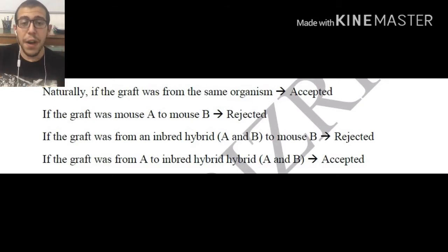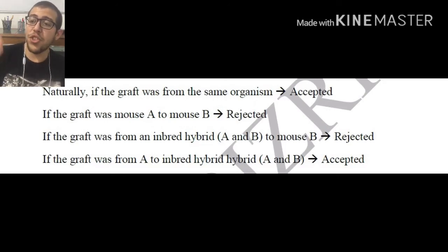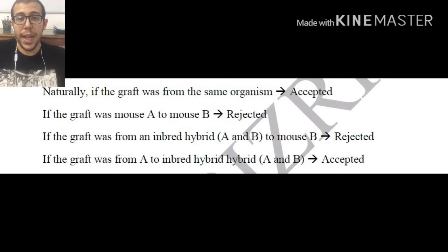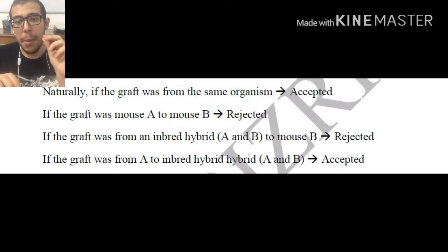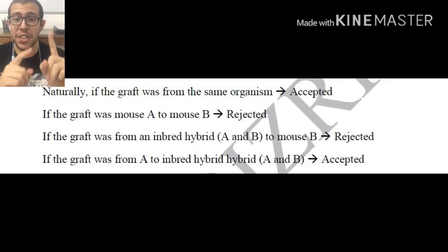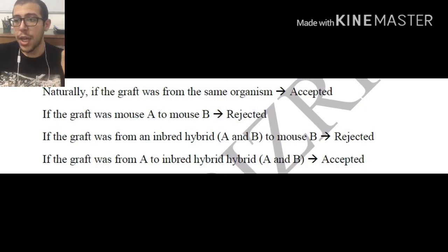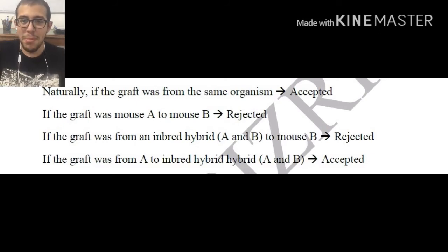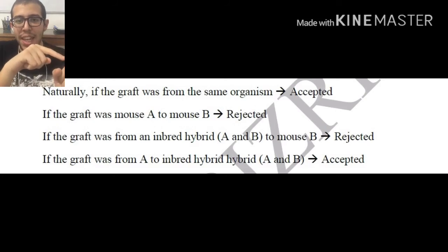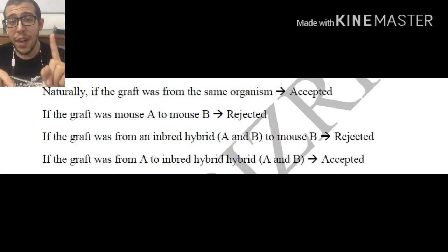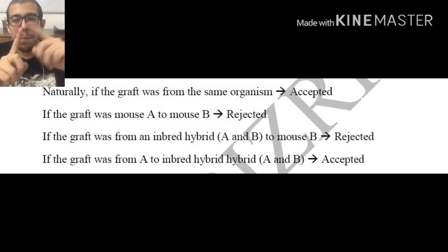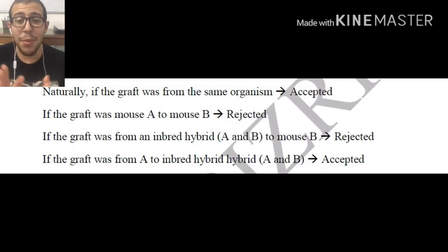I hope you're following along — it is very important to understand this distinction. On the other hand, if the graft was from strain A to an inbred hybrid A×B: the hybrid has both MHC-A and MHC-B. If we take the graft from mouse A to this hybrid, it is not going to get rejected, because the hybrid recognizes the A part. However, if this hybrid A×B is giving a graft to pure strain B, then the A part is going to elicit a rejection.